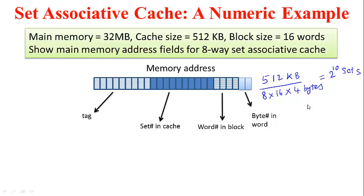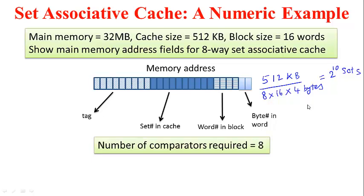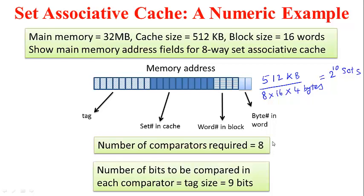In this set associative cache scheme, how many parallel comparators are required? The number of comparators is equal to the set size in terms of number of blocks, so we need 8 comparators. And how many bits does each comparator need to compare? Each comparator needs to compare 9 bits, which is the same as the tag size.